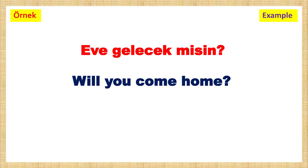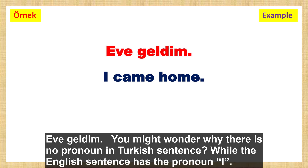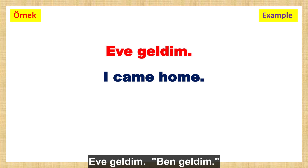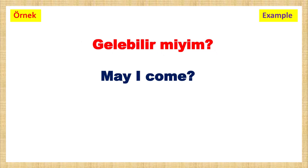Gelmek Examples. Eve gelecek misin? — Will you come home? Eve geldim — I came home. You might wonder why there is no pronoun in the Turkish sentence while the English sentence has 'I'. Remember from previous lessons that M represents the pronoun I — ben. That's why I didn't write ben. Çalışmaya geldim — I came to work. Gelebilir miyim? — May I come?